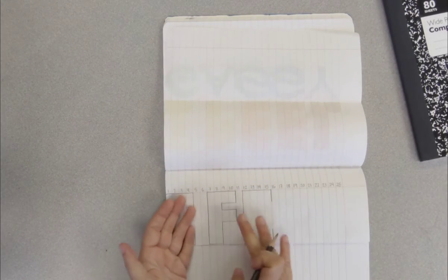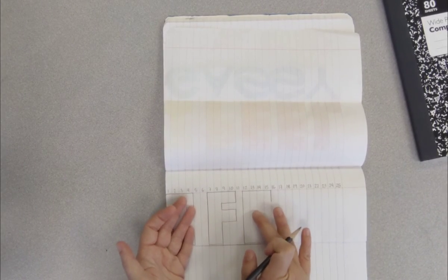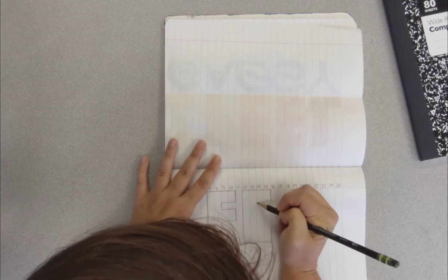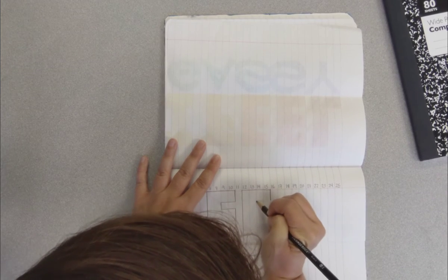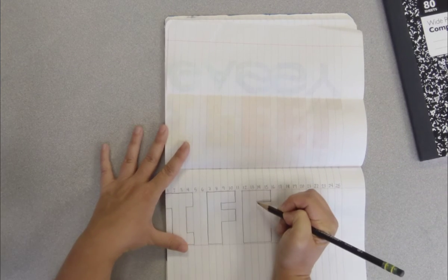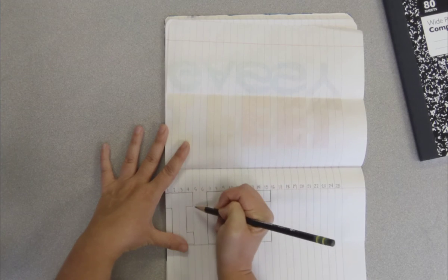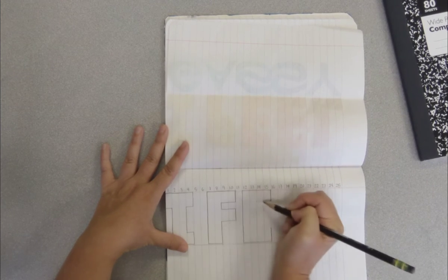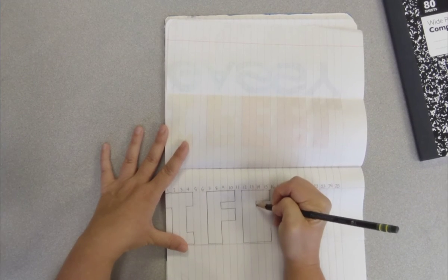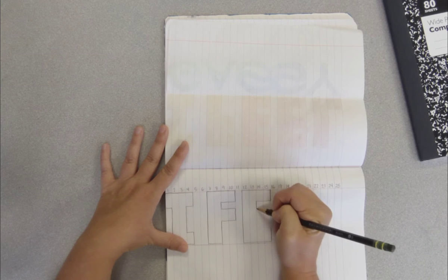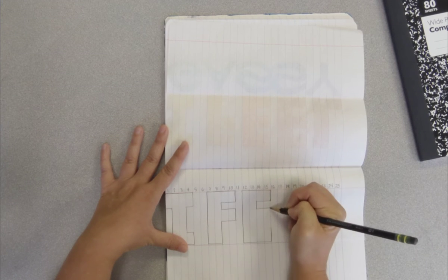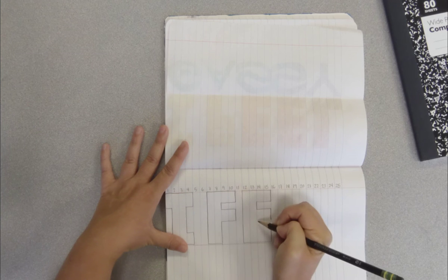The main up and down part of our E I want it to be two columns wide. I'll try to keep this line even with this line, even with this line, as much as I can to make it look clean and like all of these letters are basically out of the same sort of font.